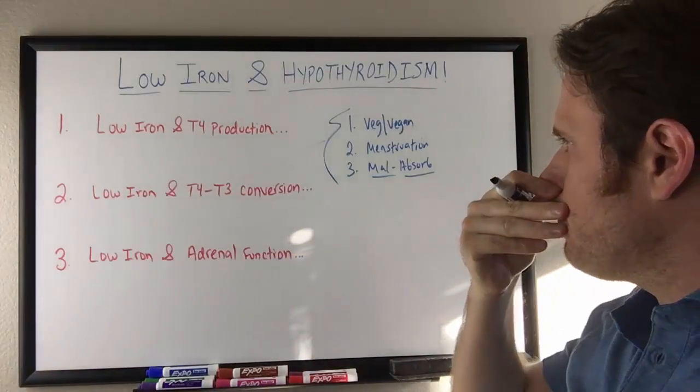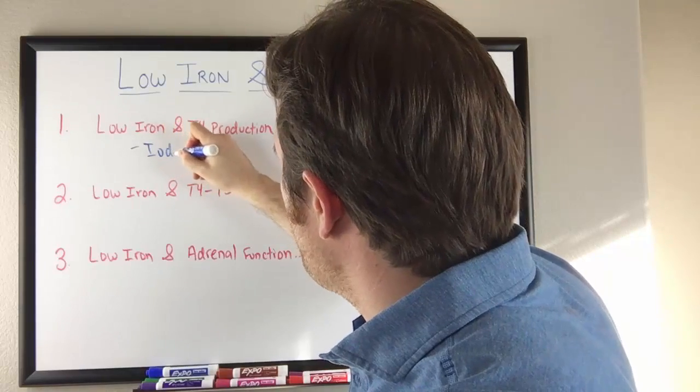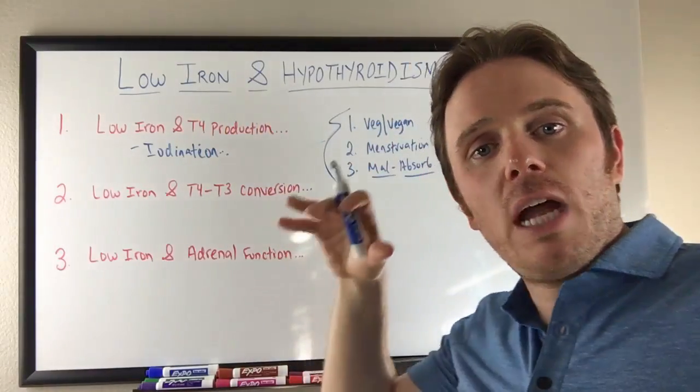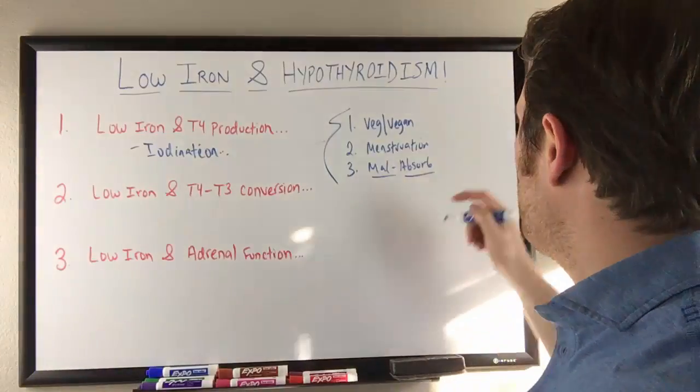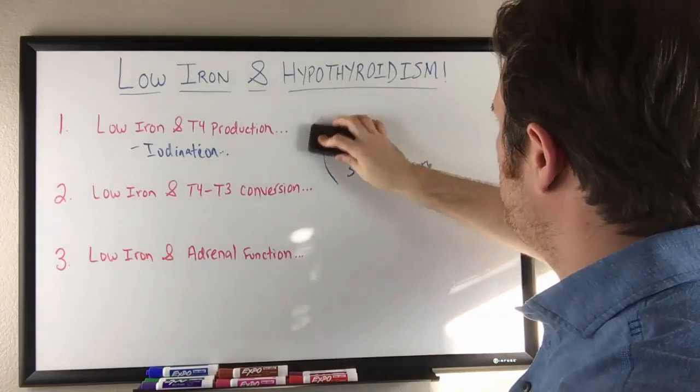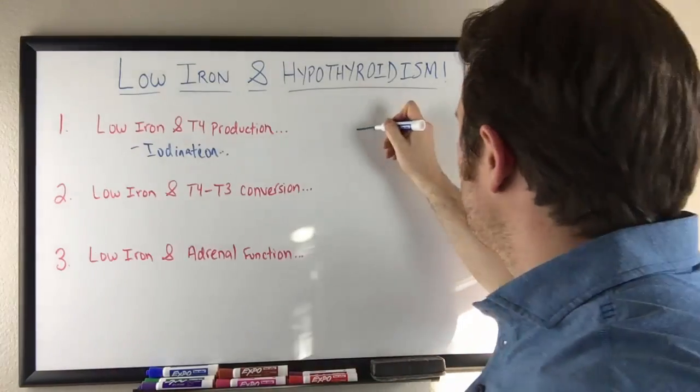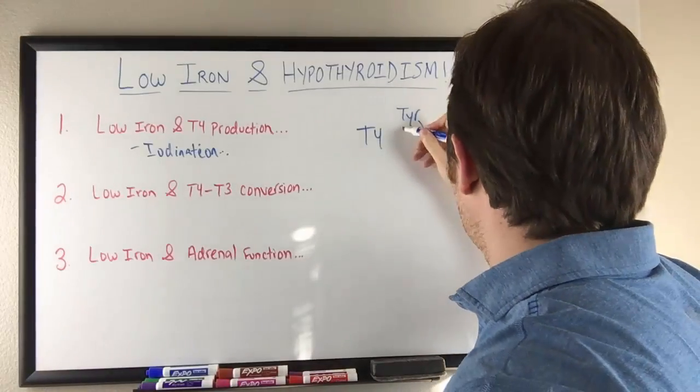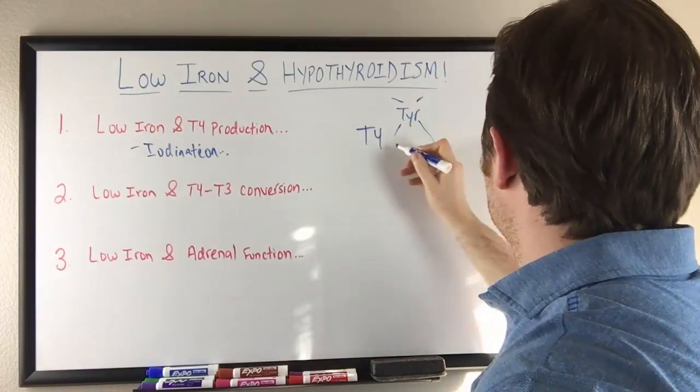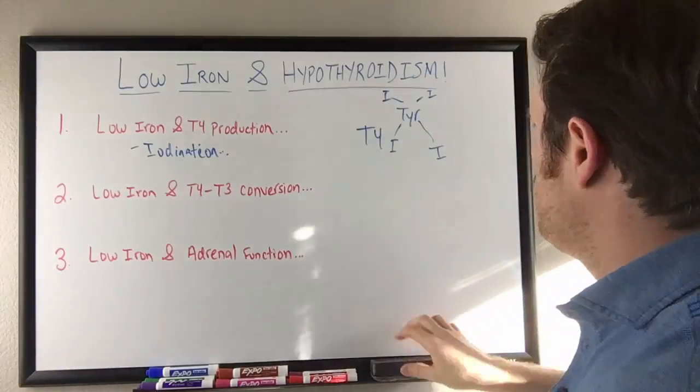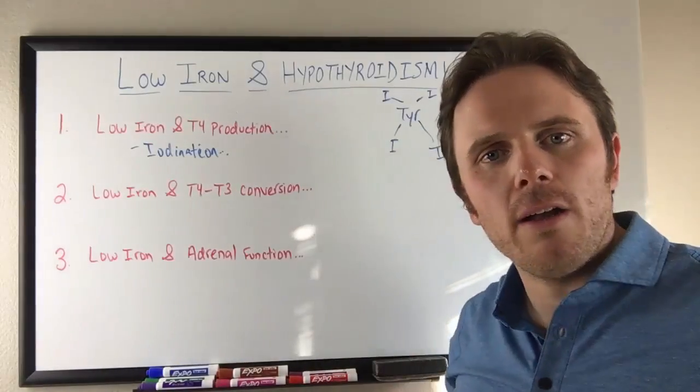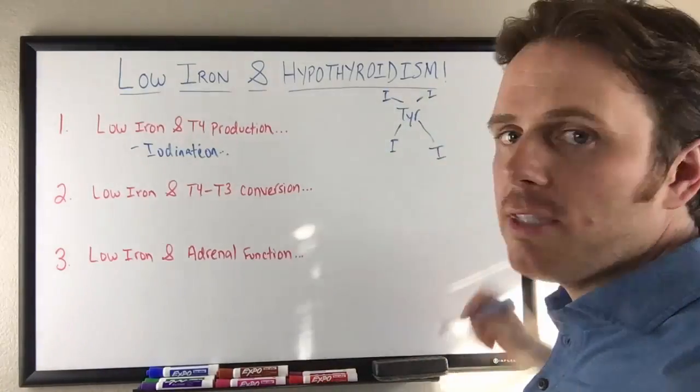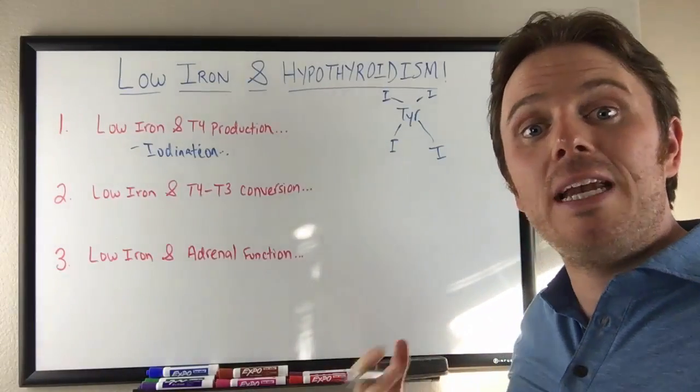But again, low iron and T4 production. There's a process known as iodination. That's basically binding iodine, tyrosine, and thyroglobulin together and making your T4 molecule. T4 is tetraiodothyroidine. So T4, really simple. It's going to be your tyrosine and it's going to be four molecules of iodine around it. That's going to be your T4. Low iron, we need iron to actually make this process. The iodination process to bind these iodines to the tyrosine is going to be iron dependent. So we need enough iron for that process.